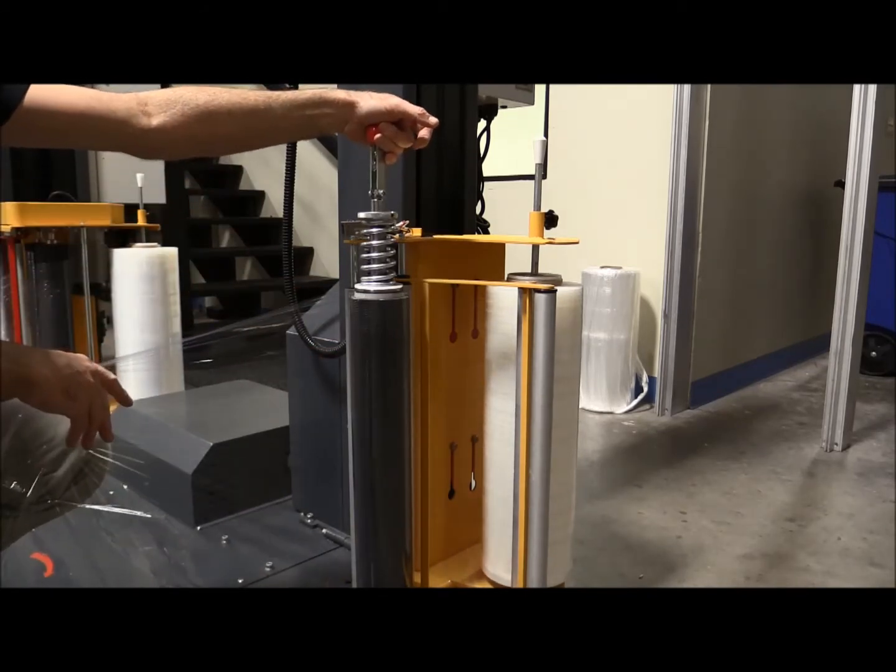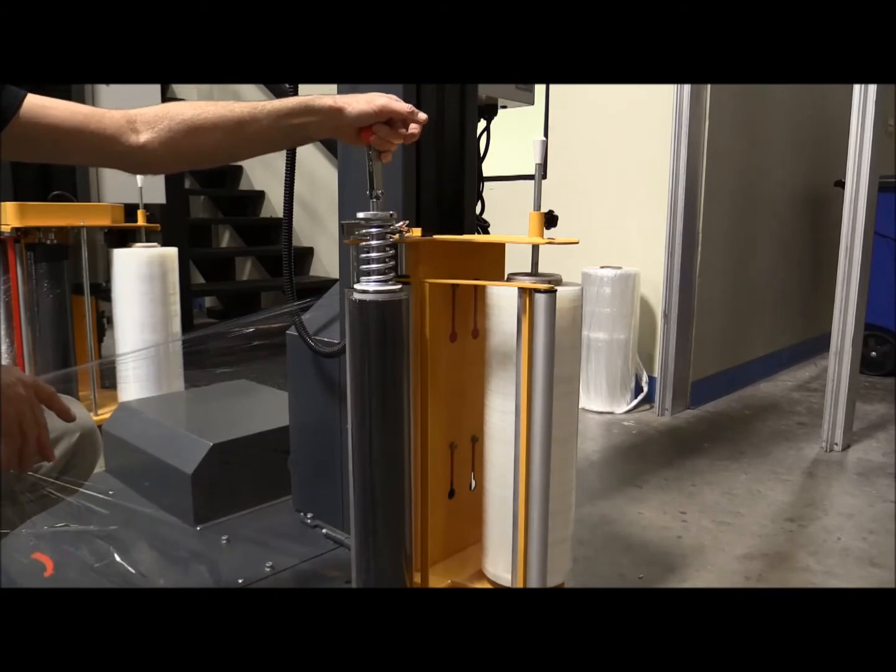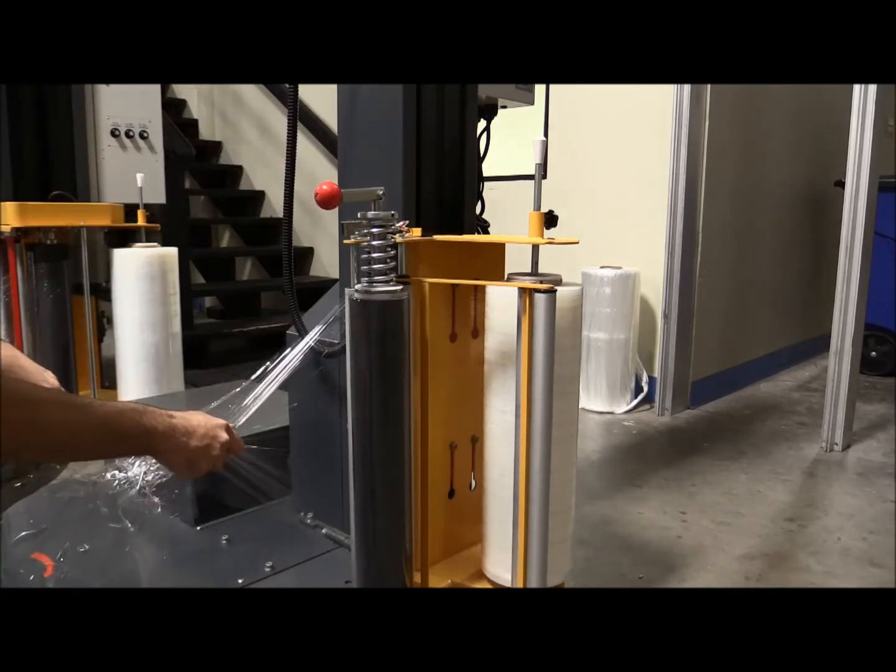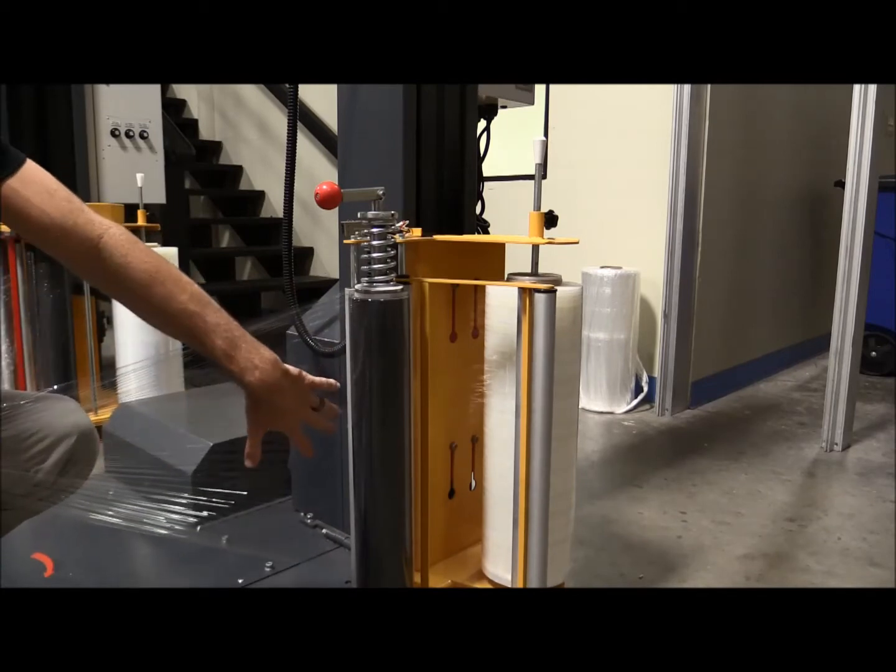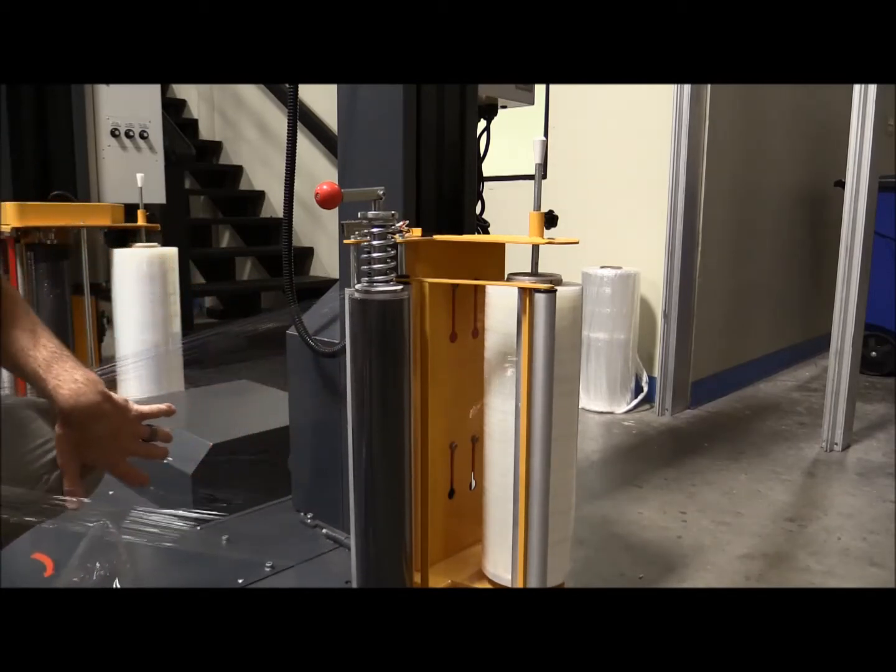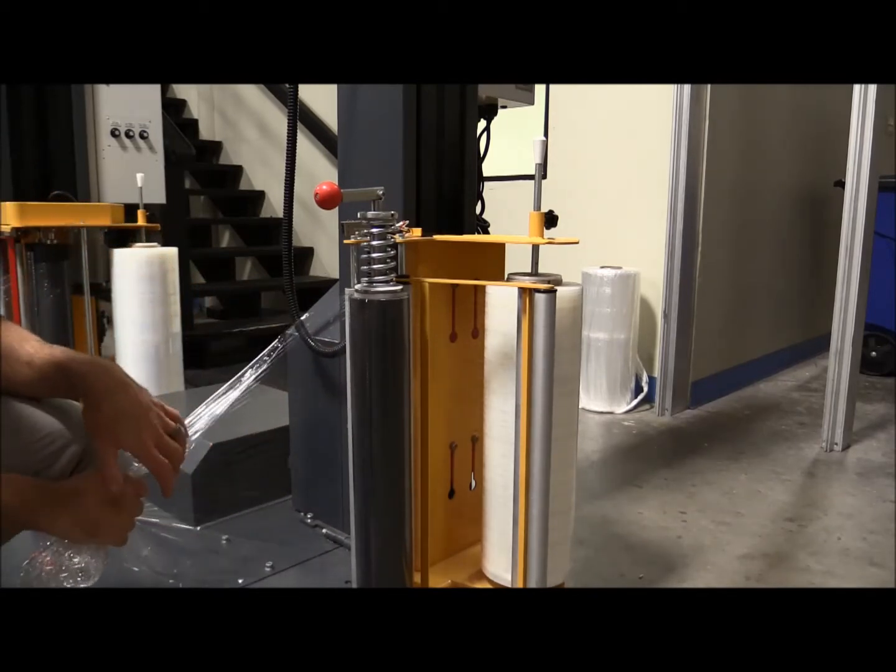So again, more tension - put it into the on position, it creates more drag, which makes it harder for this roll to turn, which creates tension as the pallet is turning.